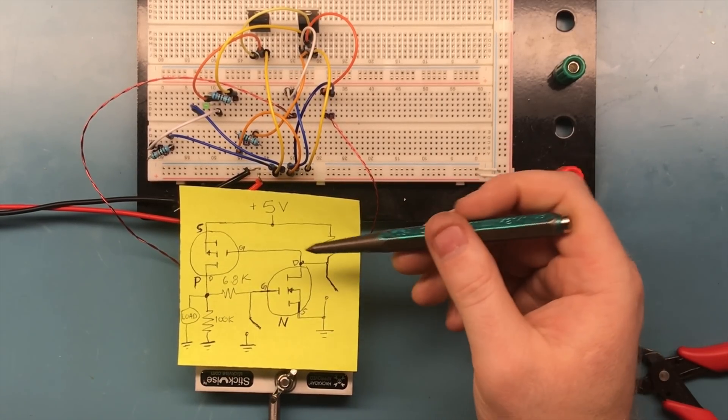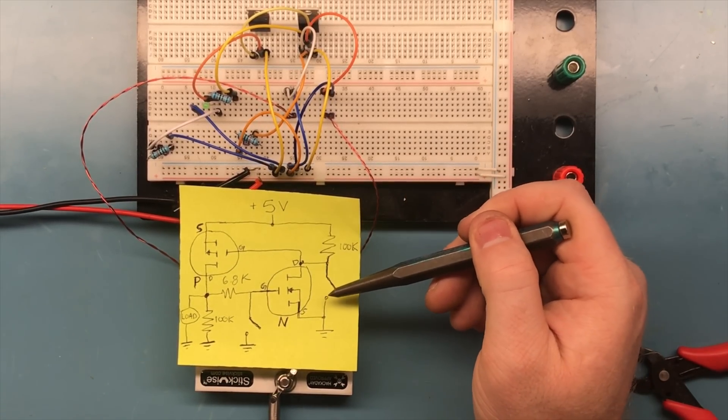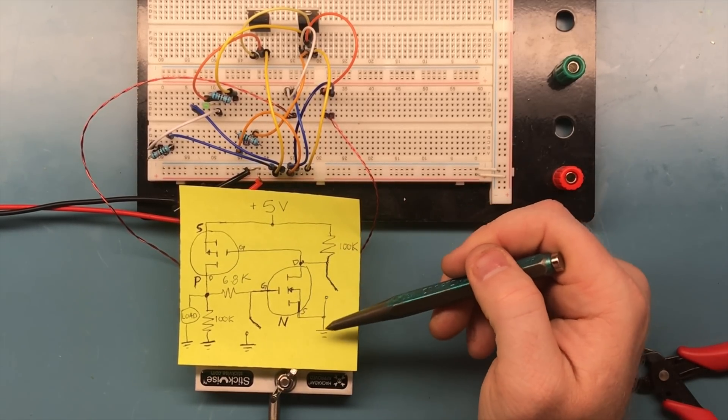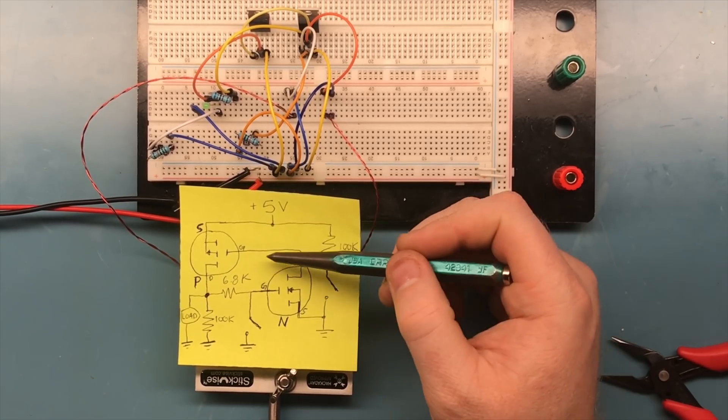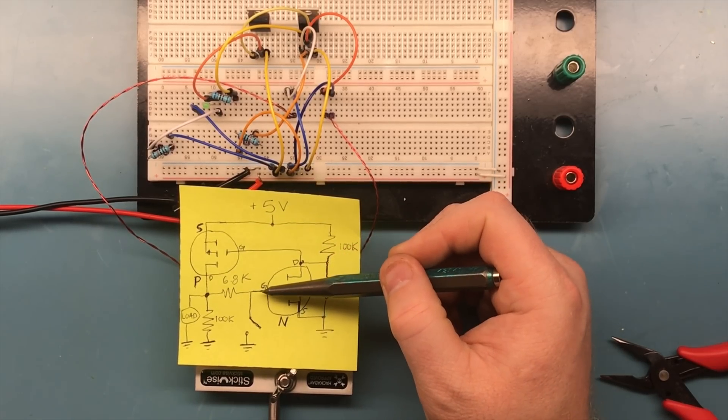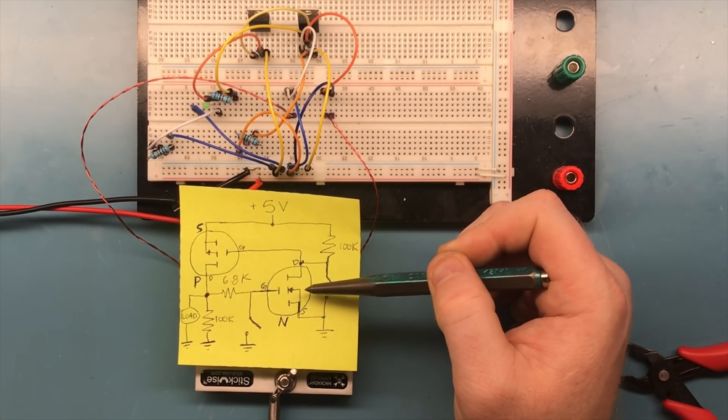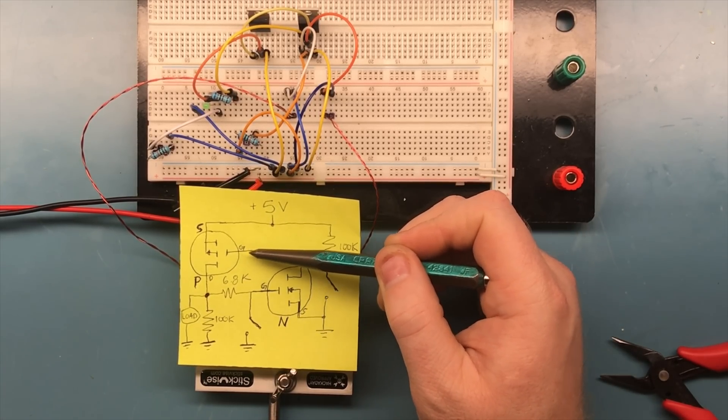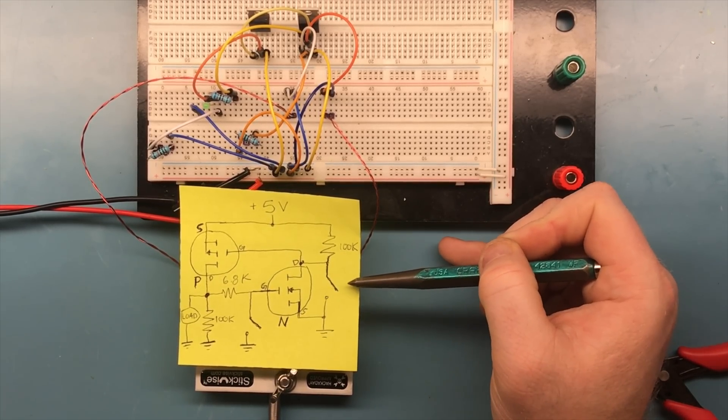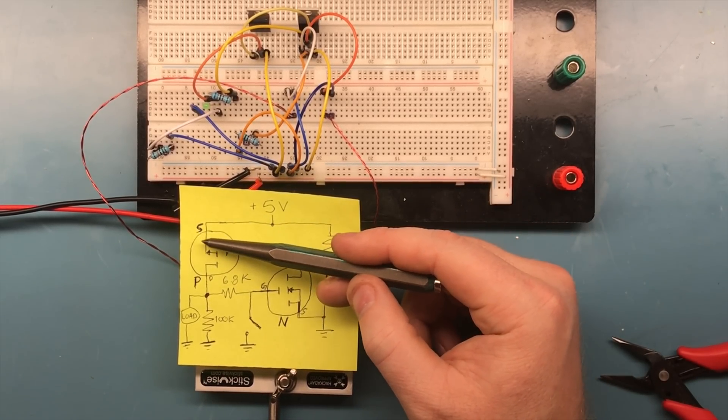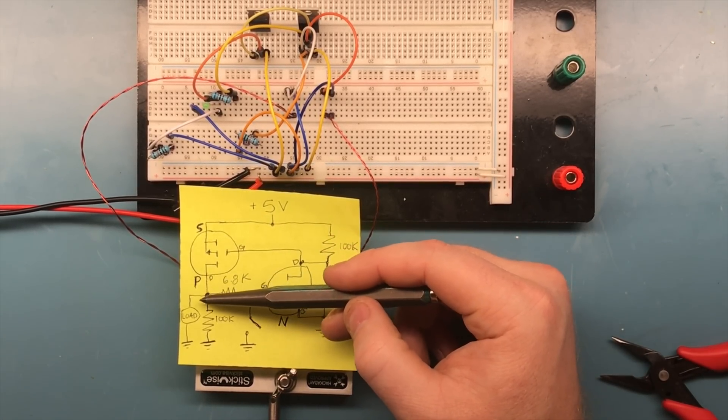So when we drop that to ground, the gate drops to ground. When the gate drops to ground, the p-channel turns on. The p-channel turns on, puts five volts at the gate of the n-channel. Once that happens, it turns on and brings the gate to ground even after that switch is let go. Now we have current flowing from five volts through our p-channel and through our load.